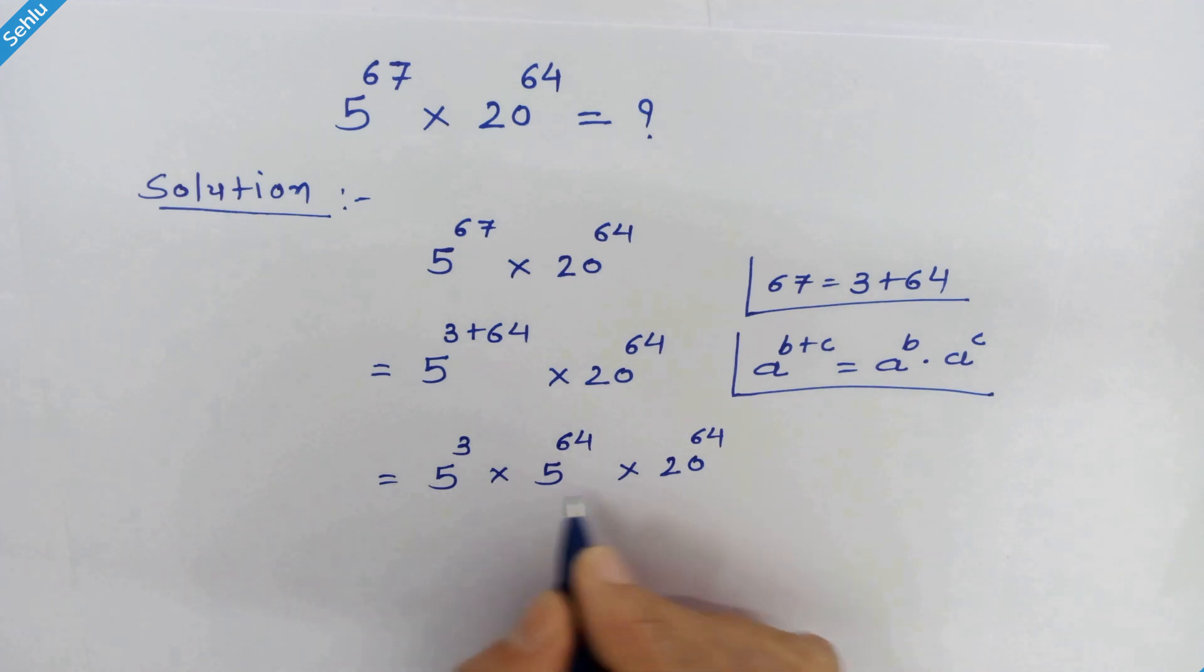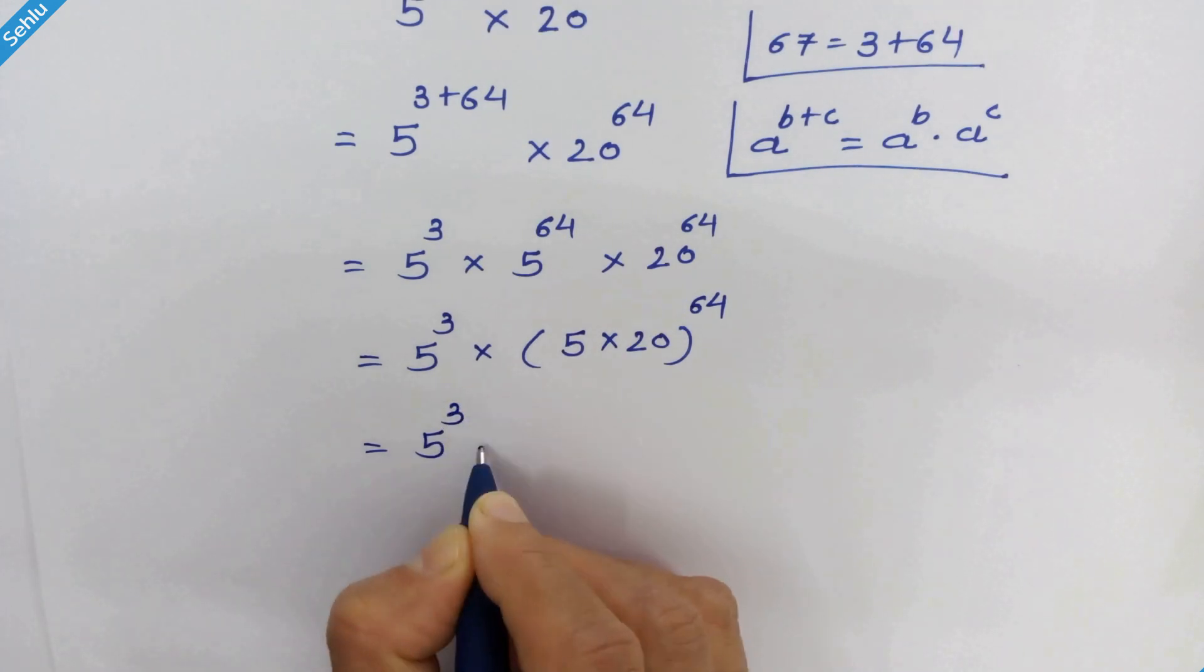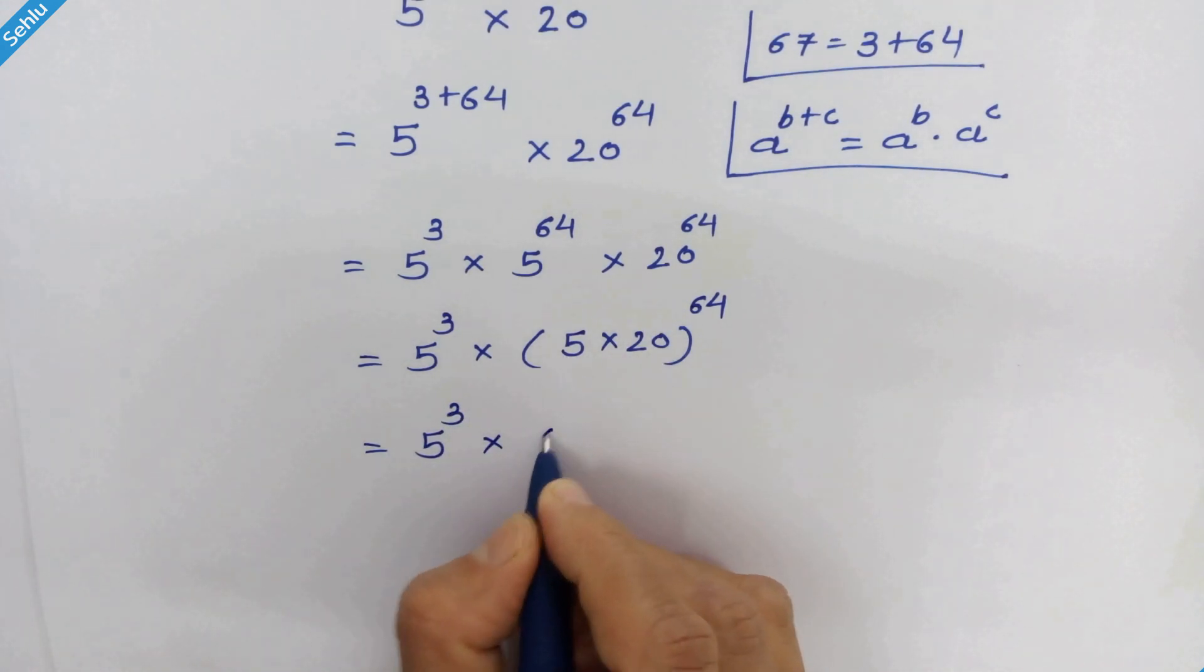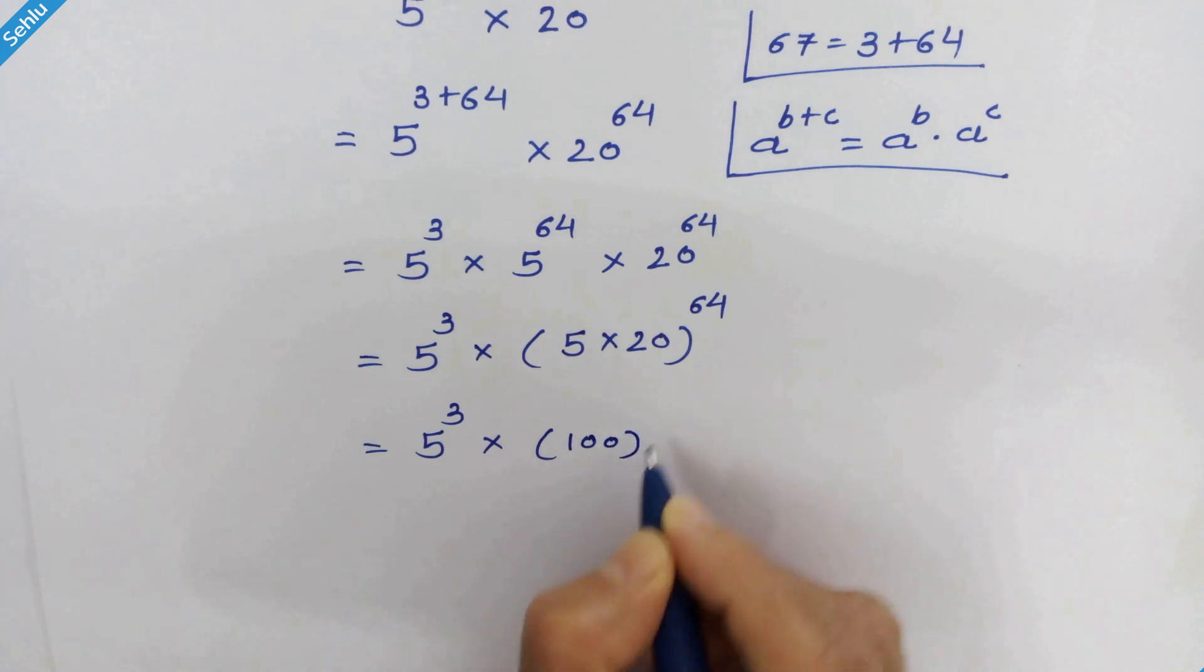Now these two have same exponent, so we can combine them. So in the next step, we have 5 cube times 5 times 20 whole raise to 64. 5 cube times 5 times 20 is 100. So we can write 100 raise to 64.